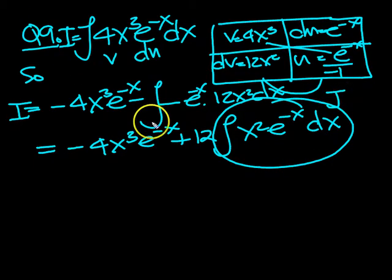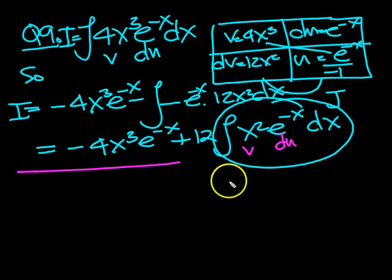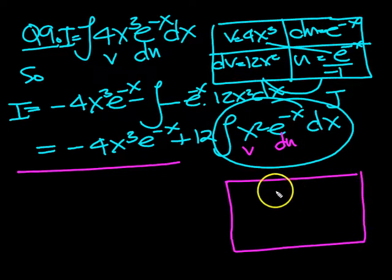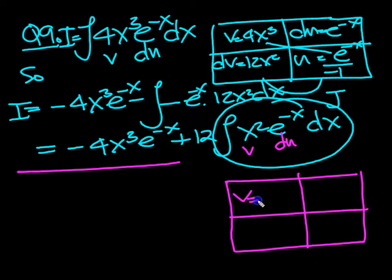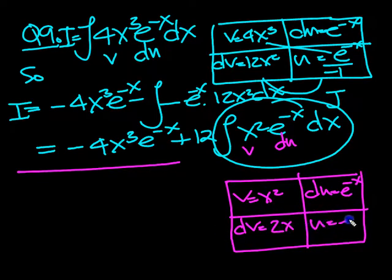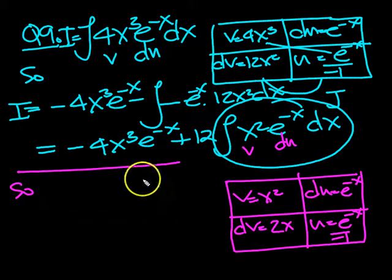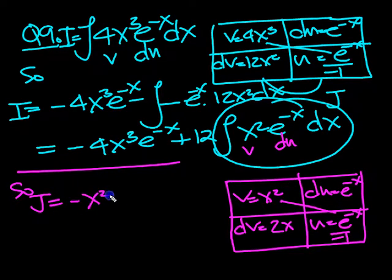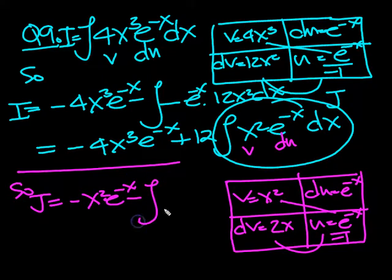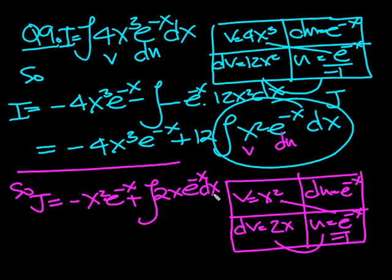Now we'll do the j problem. Draw a line across the page — we're going to call that v. This will be du. So v is equal to x squared, and du is equal to e to the minus x. So dv will be 2x, and u will be e to the minus x over minus 1. So j equals uv — those two — minus x squared e to the minus x, minus the integral of u dv dx, so it's the integral of 2x. The two minuses make a plus, so plus e to the minus x dx.